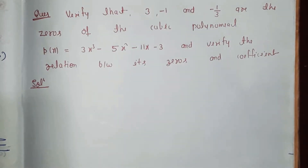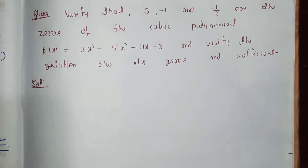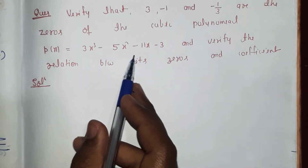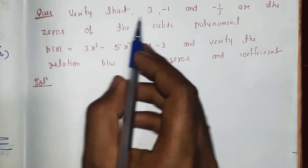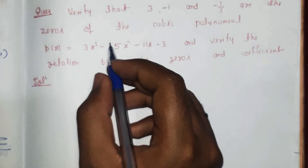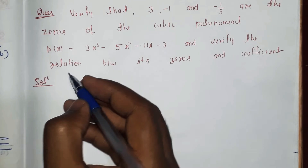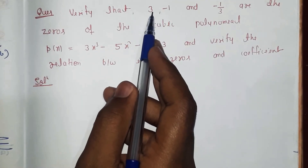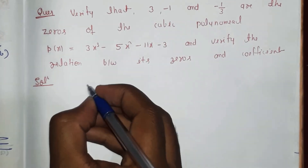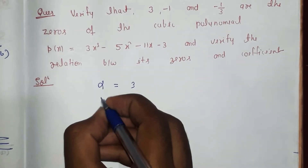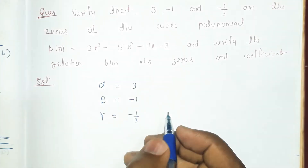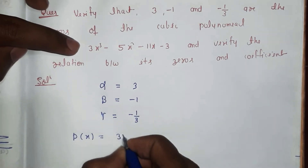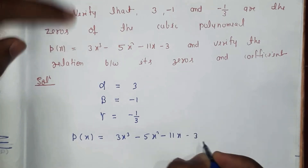Hello friends. Today's question is: verify that 3, -1, and -1/3 are the zeros of the cubic polynomial p(x) = 3x³ - 5x² - 11x - 3, and verify the relation between its zeros and coefficients. So, the x-values are 3, -1, and -1/3. We call these alpha = 3, beta = -1, and gamma = -1/3.